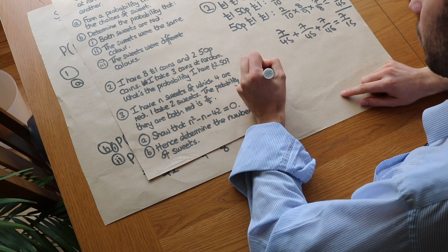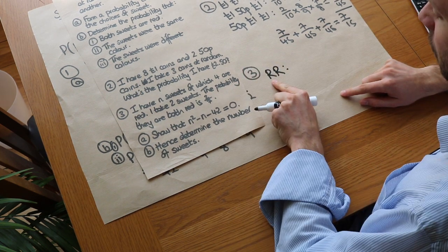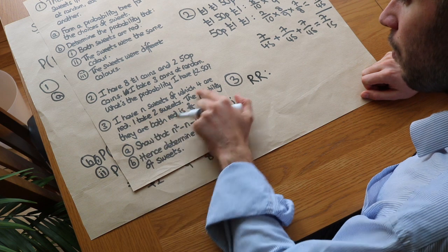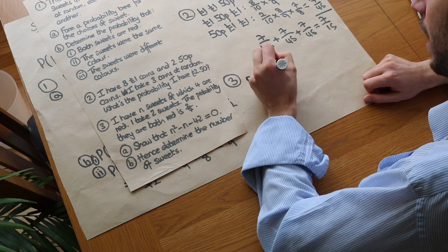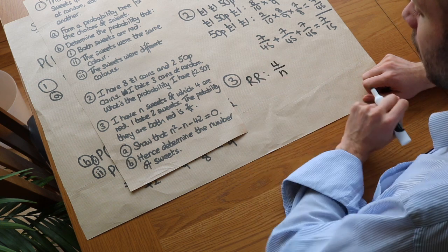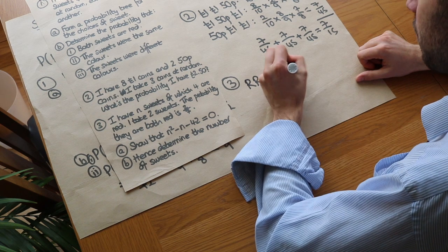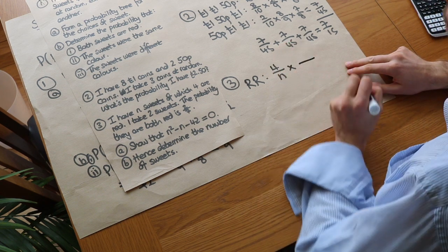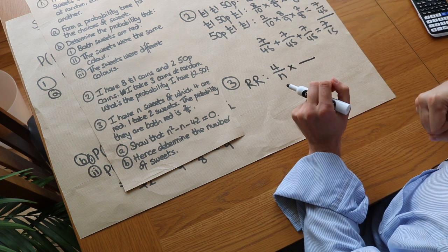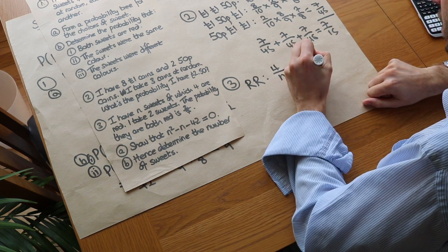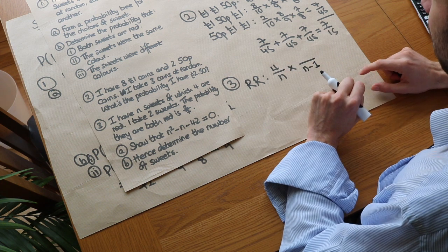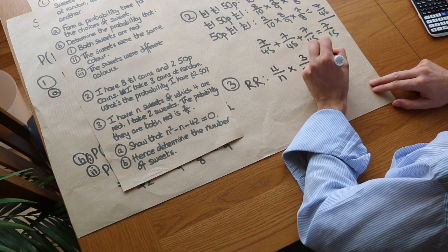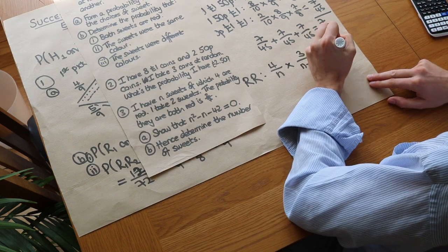Using the same technique as before: the probability the first sweet is red is 4 over n. After taking one red sweet, there are n − 1 sweets left and three red remaining, so the probability the second is red is 3 over (n − 1). Since both must be red, we multiply: (4/n) × (3/(n−1)) = 2/7.